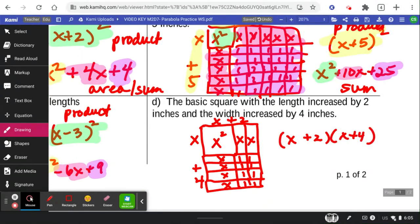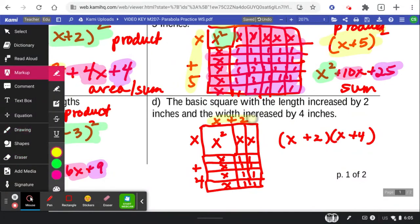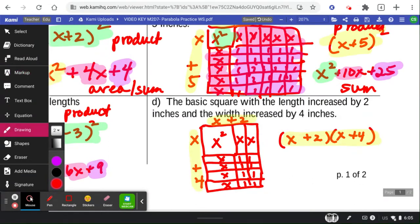So my product is still the two numbers on the outside. And my sum, 1, 2, 3, 4, 5, 6, and then plus 8.